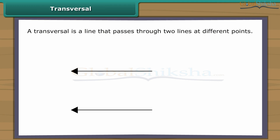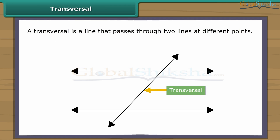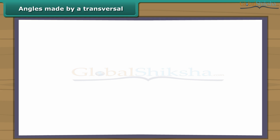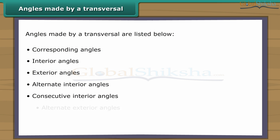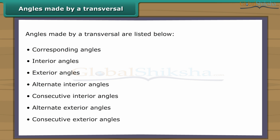A transversal is a line that passes through two lines at different points. Mostly, a transversal produces several angles. Transversals form seven types of angles: corresponding angles, interior angles, exterior angles, alternate interior angles, consecutive interior angles, alternate exterior angles, and consecutive exterior angles.